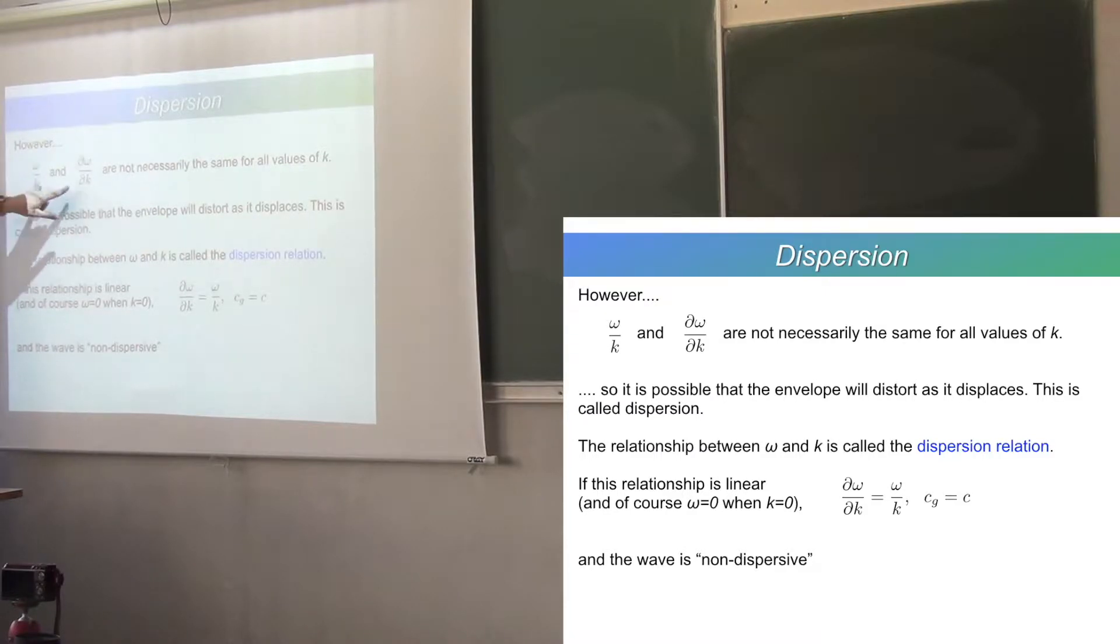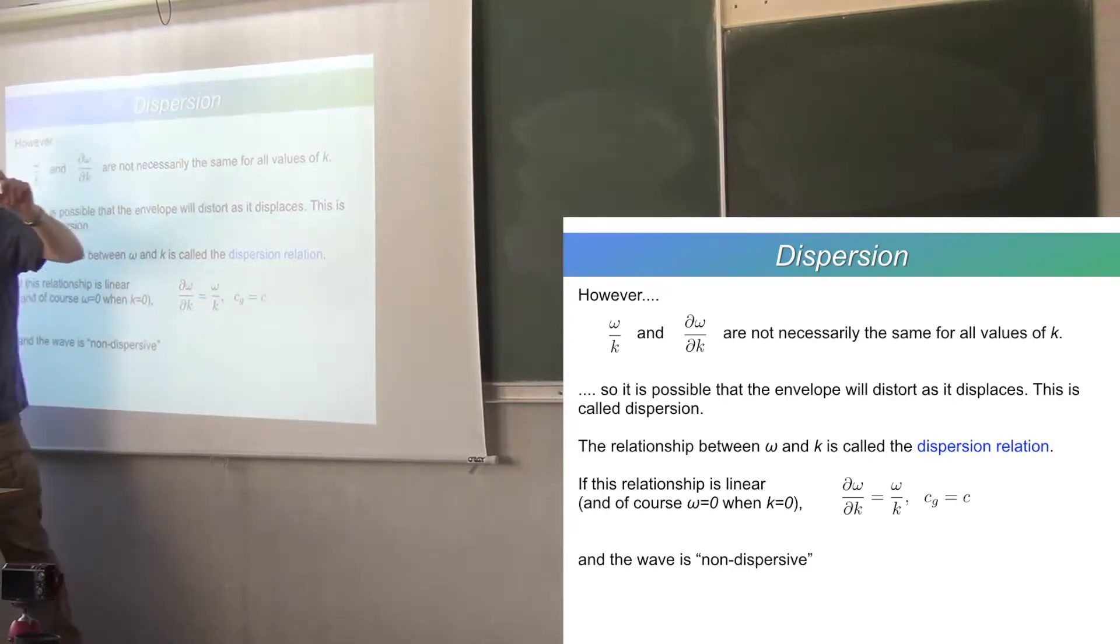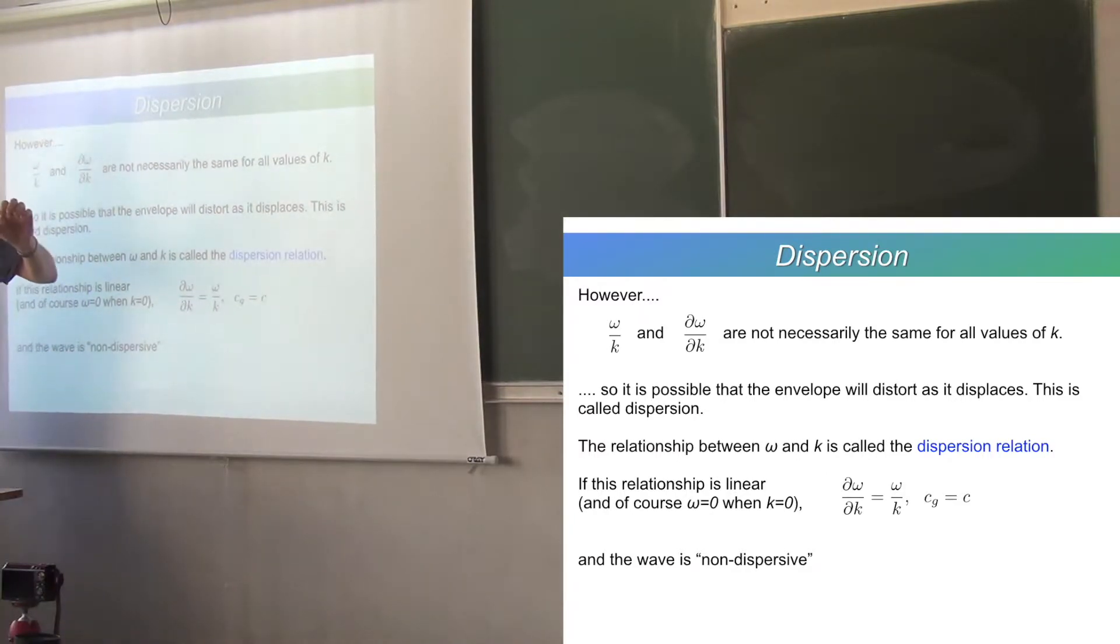The thing is that they're not necessarily the same for all values of k. That's where it gets interesting. If the phase speed or the group speed varies depending on the scale of the wave, the wavelength, then you have some complex, interesting behavior. And that's what we're going to study.